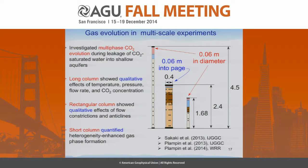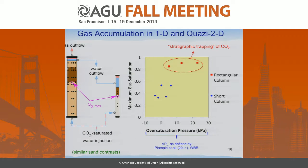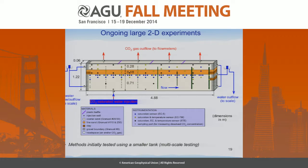The third issue we investigate has to do with bubble formation. There are a number of papers where we look at bubble evolution in columns and 2D tanks. We investigated bubble formation and accumulation. Looking at maximum gas saturation as a function of over-saturated pressure — defined in one of our Water Resources Research papers — you can immediately see that when you have this type of formation there will be trapping underneath. We were able to relate that to a theoretical model to predict how this happens. We are now running a 3D experiment with many sensors to understand this accumulation capacity.